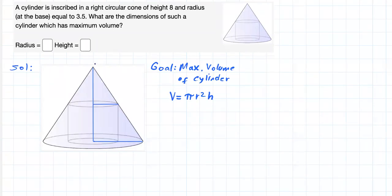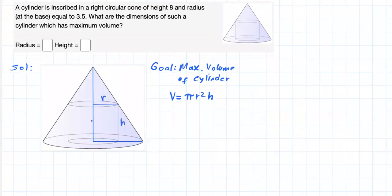Now let's take advantage of the vertical symmetry here. We're going to call this the height of the cone, this the radius of the base of the cone, and this the radius of the cylinder r. The height of the cylinder is h, and this distance that we'll need eventually should be 8 minus h.